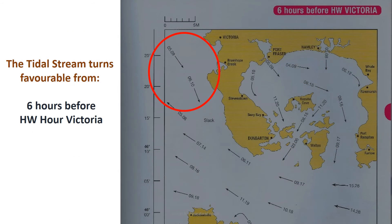By looking at the tidal atlas, we can see the tidal stream turns favourable from 6 hours before High Water Victoria. And this would give us the maximum period in which we could sail with favourable tides.